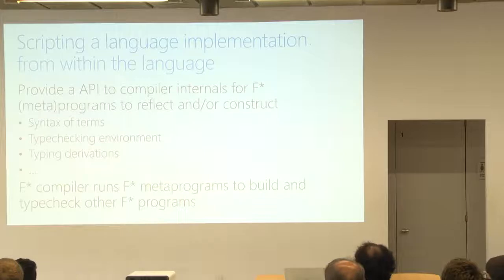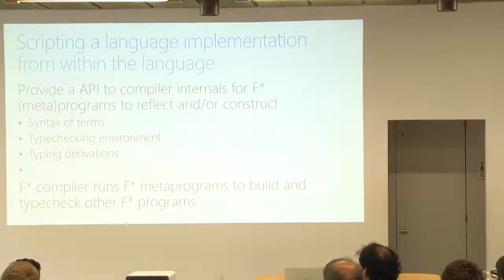So, essentially what happens is that you need to provide an API to compiler internals to F-star programs so that they can reflect and construct the syntax of terms, the type checking environment, typing derivations, extraction. They should be able to reflect and construct on every internal compiler data structure. But do so in a safe way.